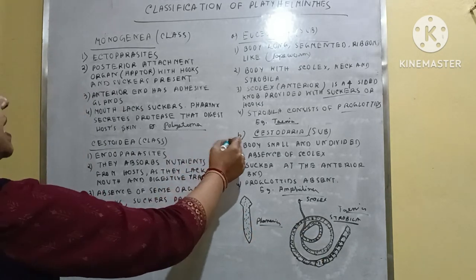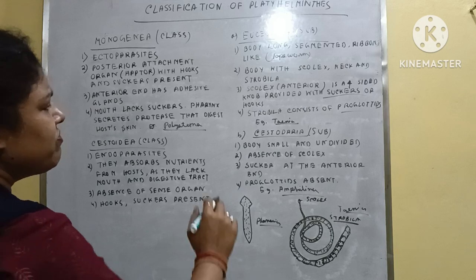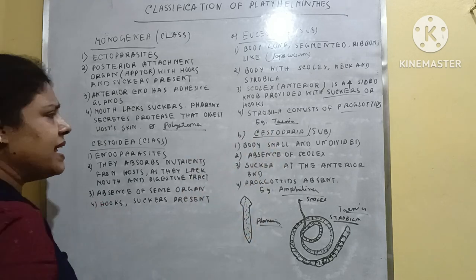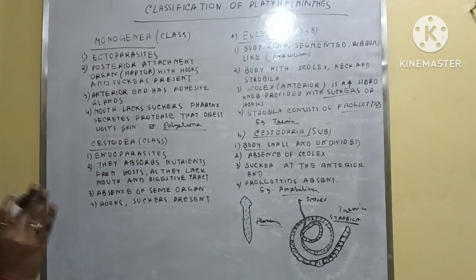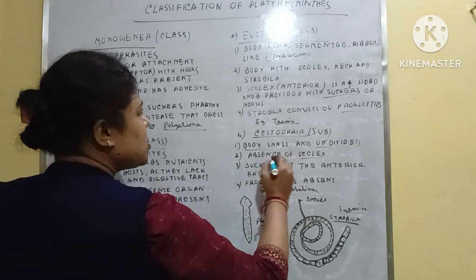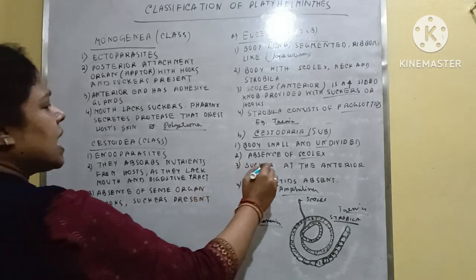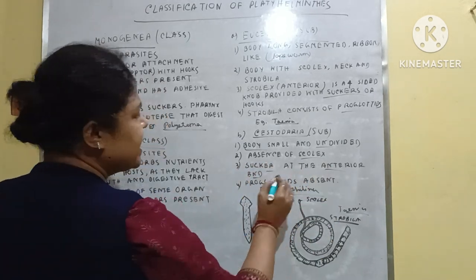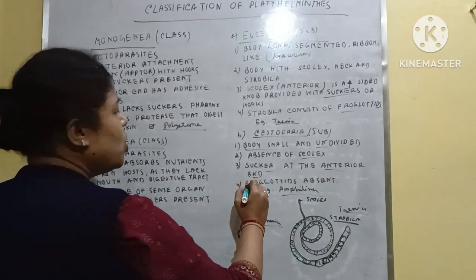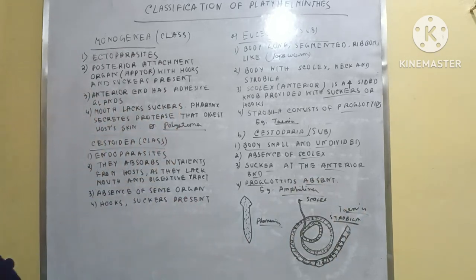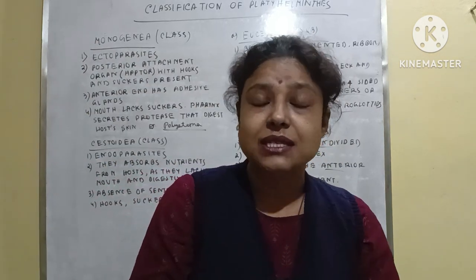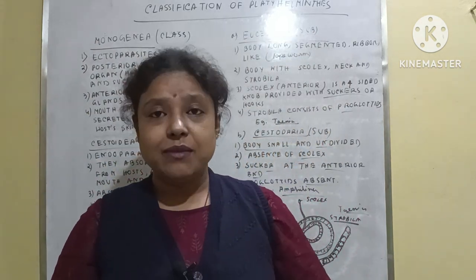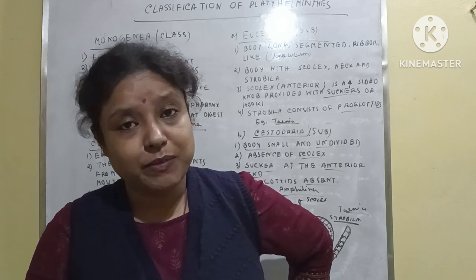The second subclass is Cestodaria. The body is very small and undivided — no segmentation is seen. Scolex is absent. Suckers are present at the anterior end, but proglottids are absent. These are the features of the classes, subclasses, and phylum Platyhelminthes.